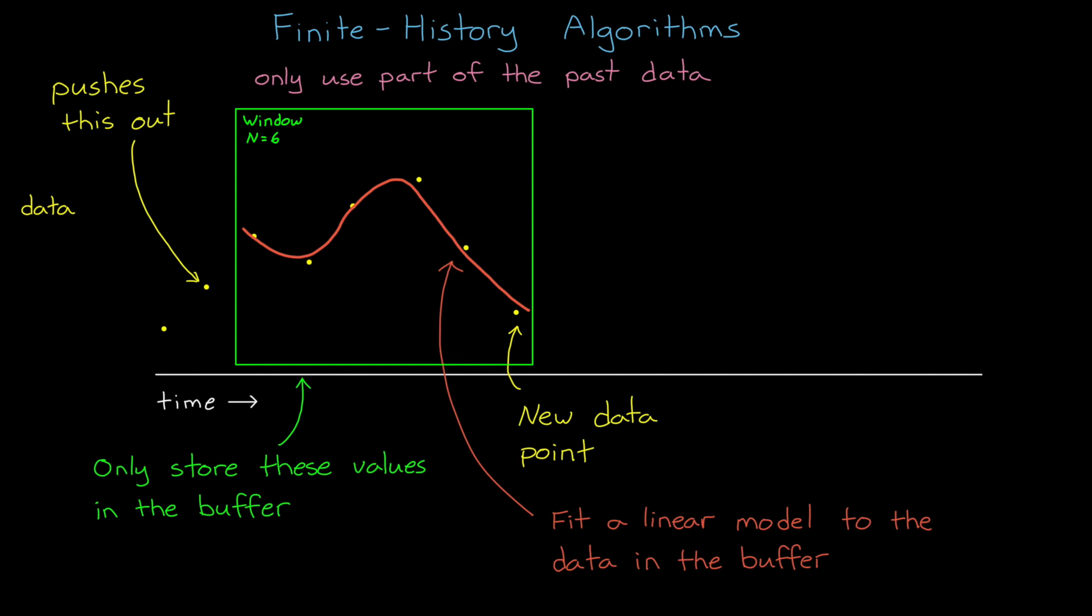It just so happens that this data is collected real-time from the system and we're limiting ourselves to just the last n samples. One thing that makes finite history algorithms a good choice for rapidly changing systems is that we only ever look at and consider the latest data when fitting a model.